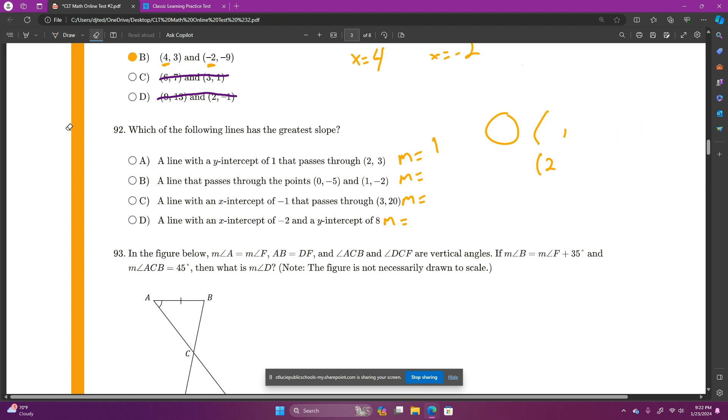And then, answer choice B says a line that passes through the points 0, negative 5, and 1, negative 2. And change in y over change in x. My y goes up 3, while my x goes over 1. So, my slope is 3. That's bigger. You're out.